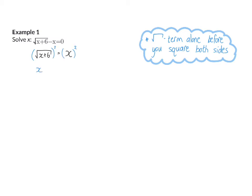Now the square root term is alone, so I can square both sides. On the left I'm left with x plus 6; on the right, x squared. Now I have a quadratic equation, so I take all terms to one side equal to 0 and factorize. That gives x minus 3 times x plus 2, so x equals 3 or x equals minus 2.